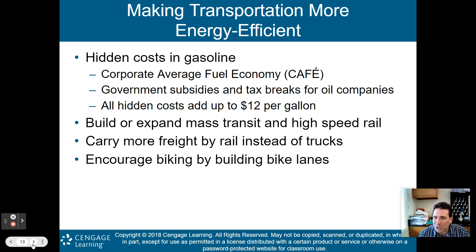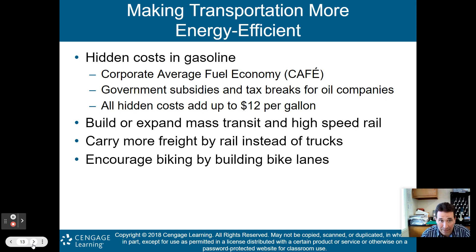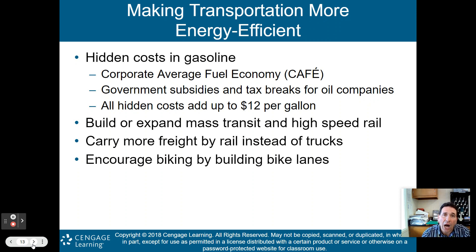We also need to make transportation more efficient. We need full cost pricing — the hidden cost of gasoline. CAFE, the corporate average fuel economy, needs to be increased. Government subsidies and tax breaks for oil companies need to cease. If we add in all the hidden environmental costs, gas would be $12 a gallon here in the United States, and we would be moving to more electric and hybrid vehicles.